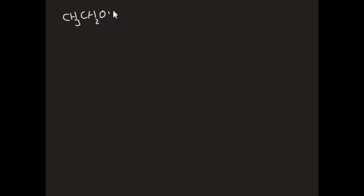Now we will see how ethyl alcohol gives this series of reactions. Ethyl alcohol is CH₃CH₂OH. If this ethyl alcohol is taken with iodine or red phosphorus and iodine, then this ethyl alcohol will be converted into iodide — CH₃CH₂I — as said earlier. That is the product formed in this step. The next step is treating this with silver nitrite, which is AgNO₂.